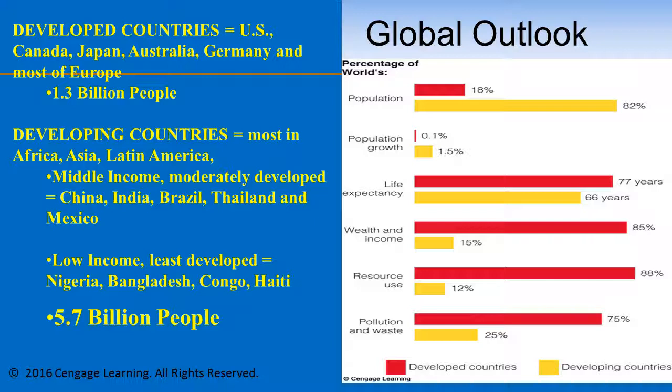As far as resource use is concerned, most of the resources used are being consumed in developed countries, which makes sense because those countries have purchasing power. However, 88% of resource use occurs in wealthy or developed countries, which contain the least amount of population globally. It follows that most of the pollution and waste — about 75% — is also being contributed by developed countries, whereas 25% falls under developing countries. This graphic really does depict an unequal distribution of wealth, resource use, and waste and pollution. It really does fall in the hands of developed countries to make a choice to pursue sustainability.